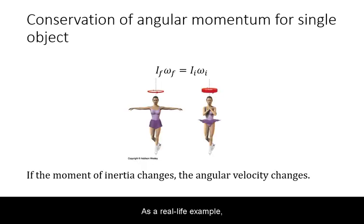As a real life example, you can think of the spinning of a figure skater. A figure skater often starts their spin with their arms and often legs extended. She then draws her arms and legs in and her spin rate will increase accordingly. She can then extend her arms and legs back out to slow her spin.